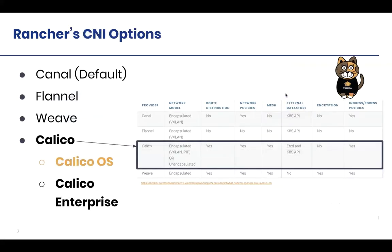If you take a step back — if you're just getting started with Rancher — at some point throughout your design process you come to a point where you have to make a decision on the CNI options, make a choice on which option you want to choose.